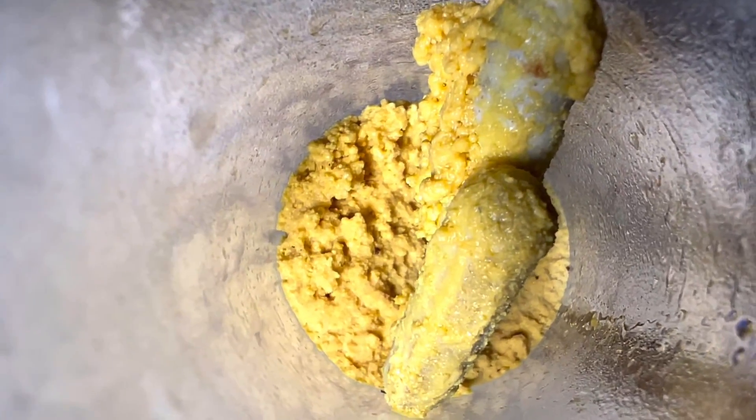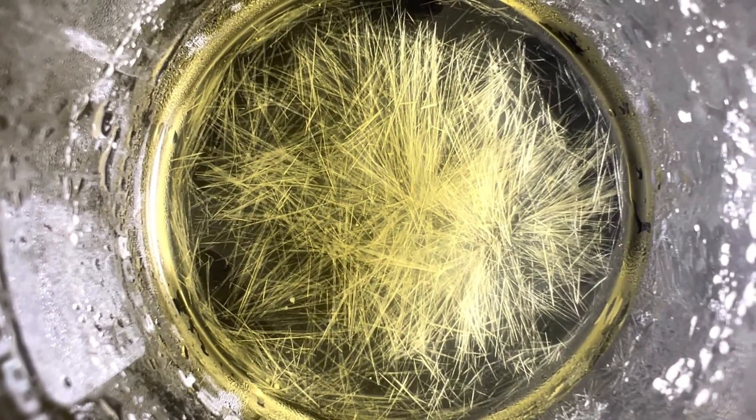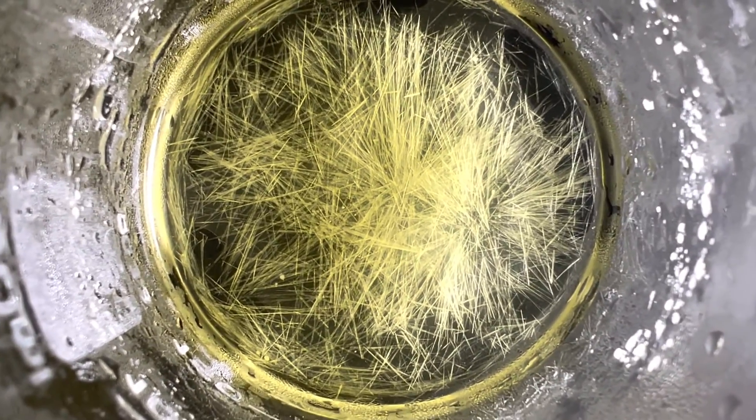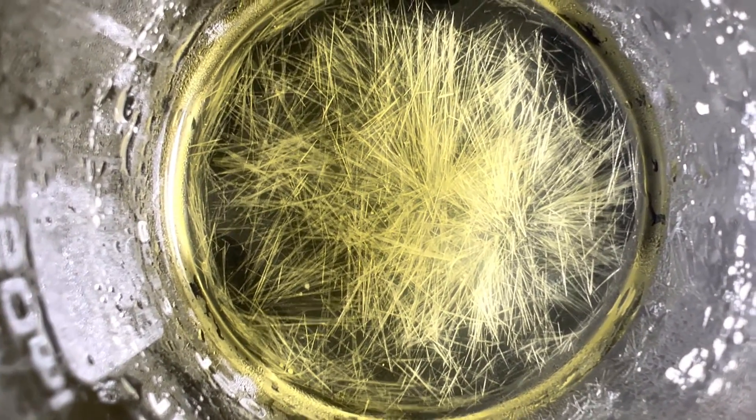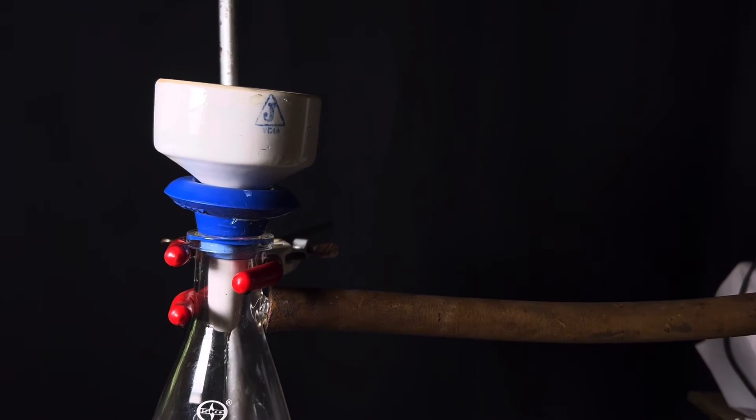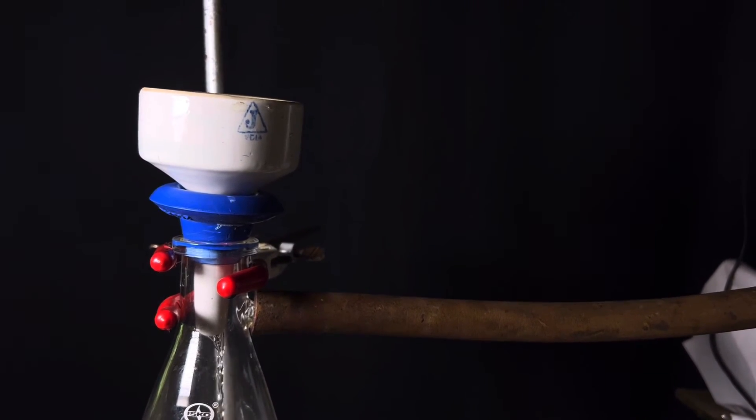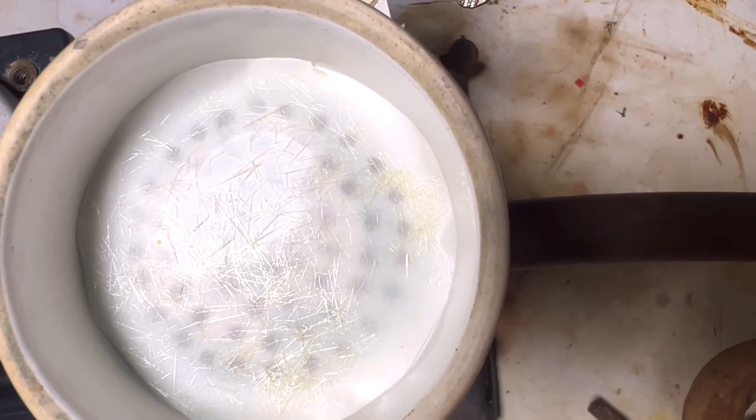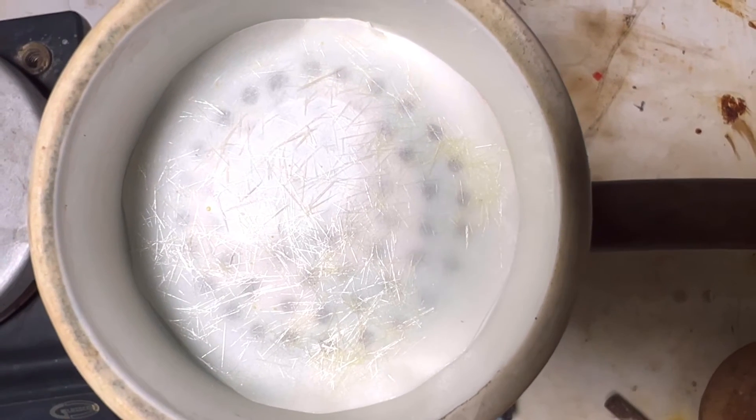The crude product was then collected from the funnel and was recrystallized from hot 95% ethanol solution to get the needle-shaped crystals of pure azoxybenzene. It was later vacuum filtered and collected.